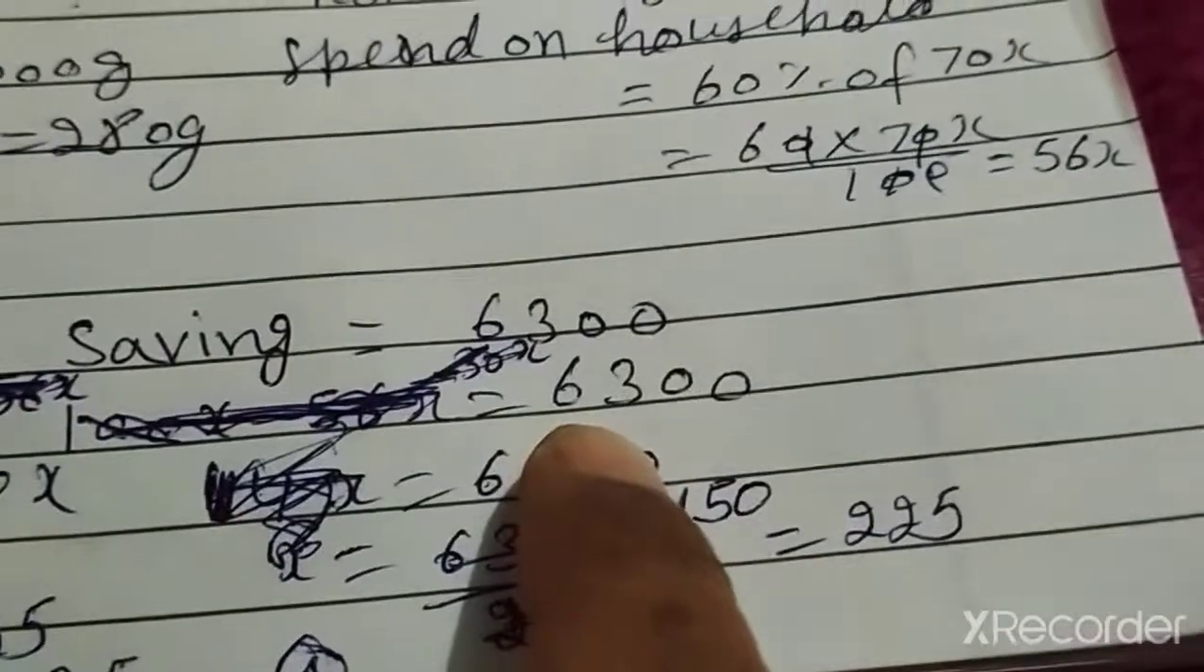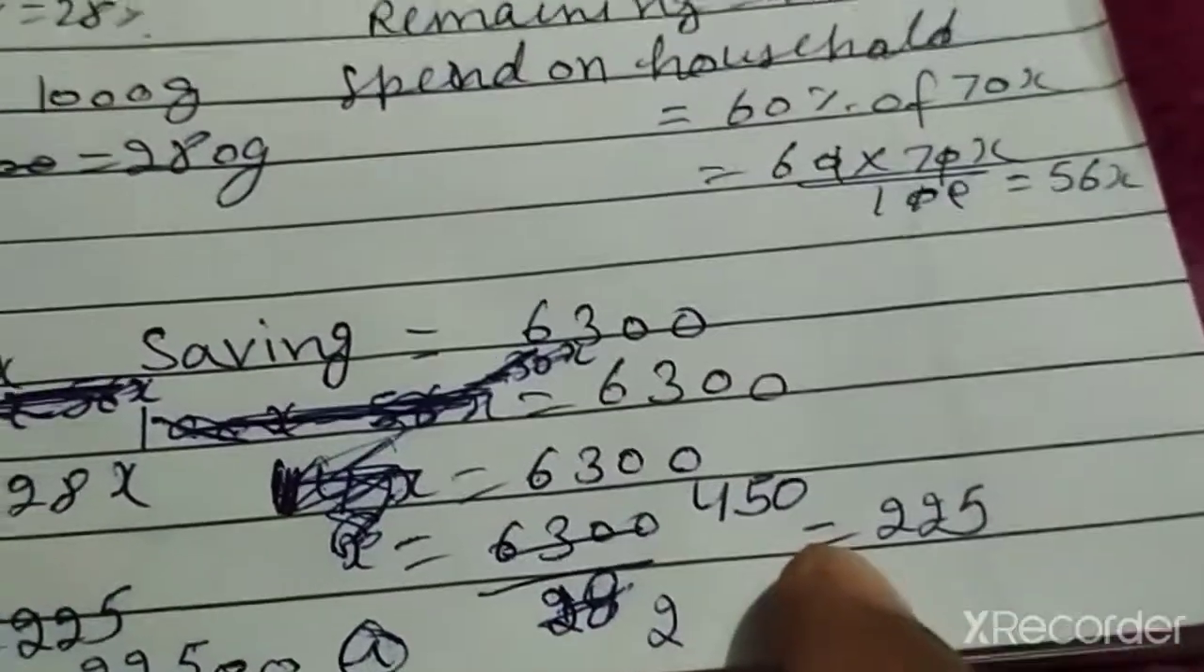Question 29: copper 32%, zinc 40%, nickel 28%. So 28% of 1 kg nikalna hai. Last question: income thi 100X suppose kar lete hain, uska 30% spend kar diya. Jo bacha 70%, 70% ka 60% household me spend kar diya. Jo bacha 70 minus 42, that's 28X equal to 6300. X ki value 225, so 100X is 22,500.